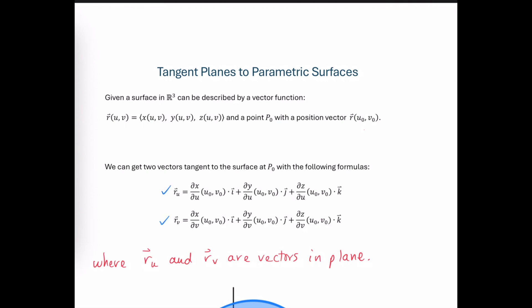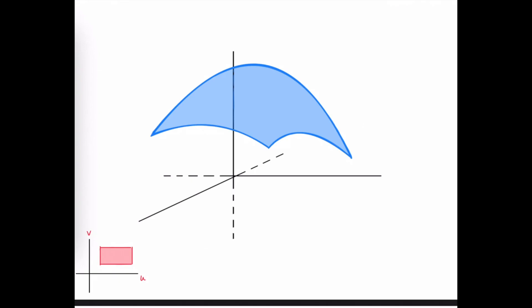Let's take a brief look at where these formulas come from. Consider this surface as some arbitrary surface that has been parameterized. The domain of that surface is some region in the uv plane, and we'll consider the point u₀, v₀ as the domain element that maps to a point on the surface — the point at which we want to find the tangent plane.